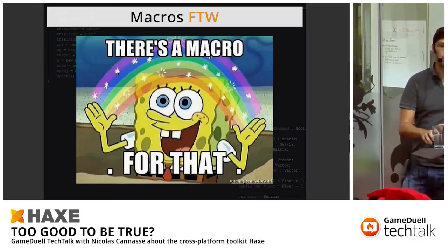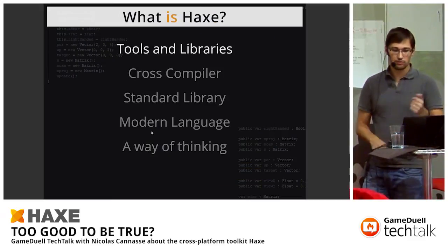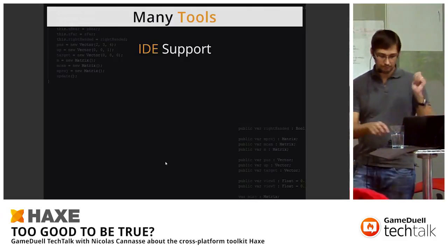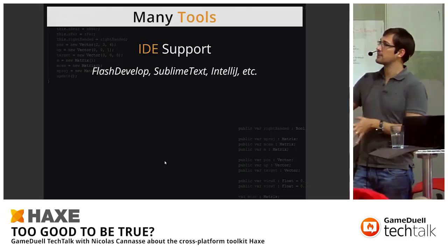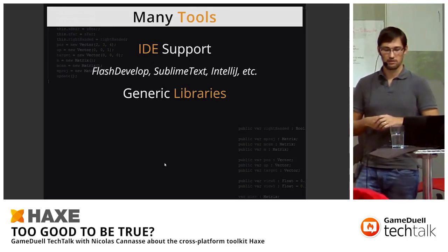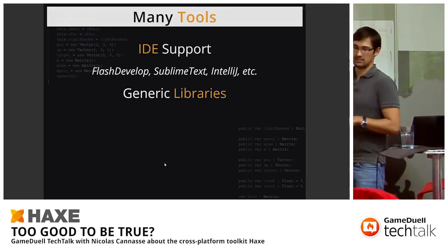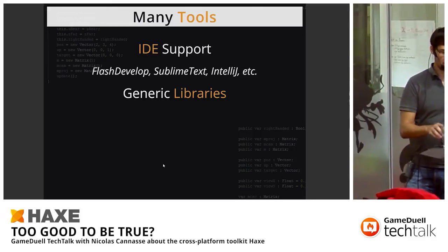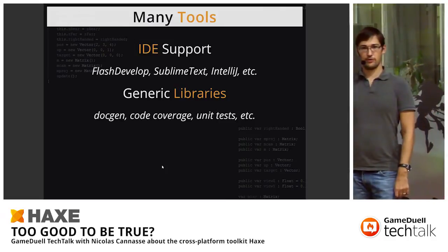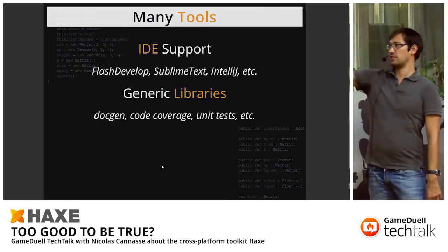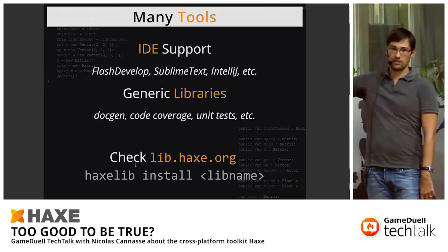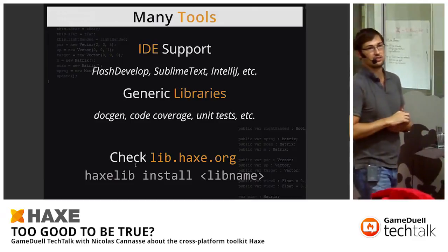Tools and libraries — we're almost done. For IDE support we have FlashDevelop, Sublime Text, IntelliJ, and others. Not perfect integration, but getting better. We have generic libraries for code coverage, unit testing, and documentation generation. You can check lib.haxe.org, our package manager — just run 'haxelib install <library-name>' and it's installed and ready to use.